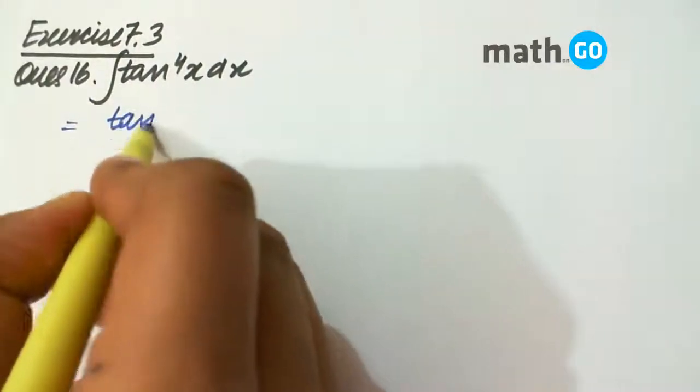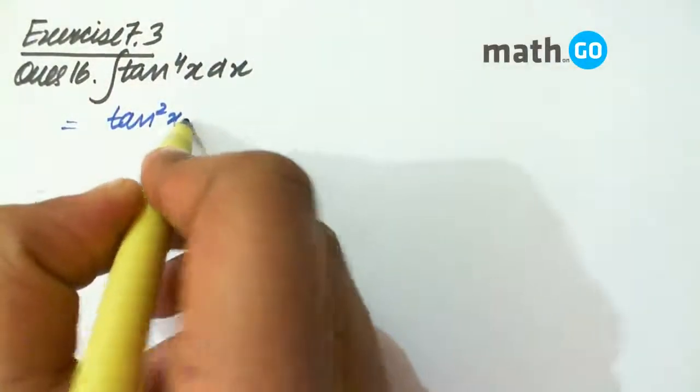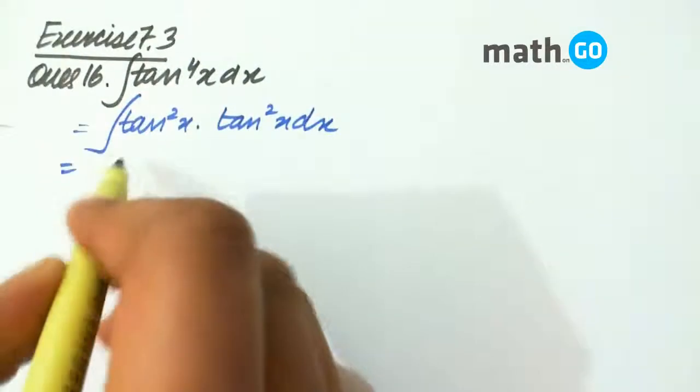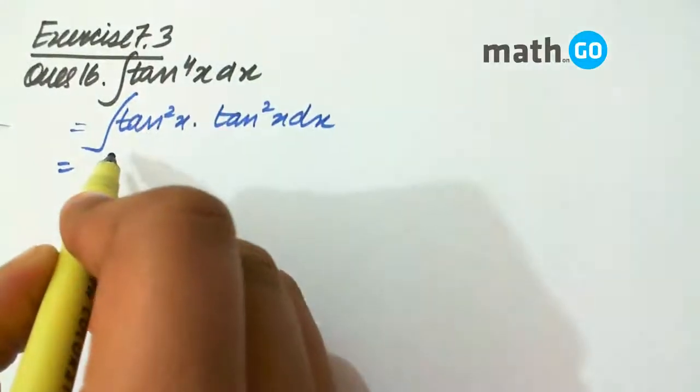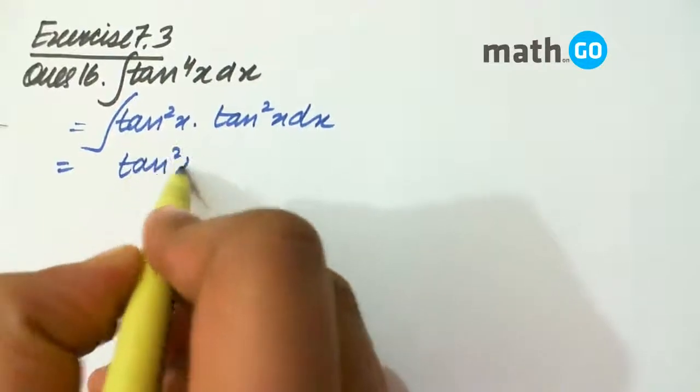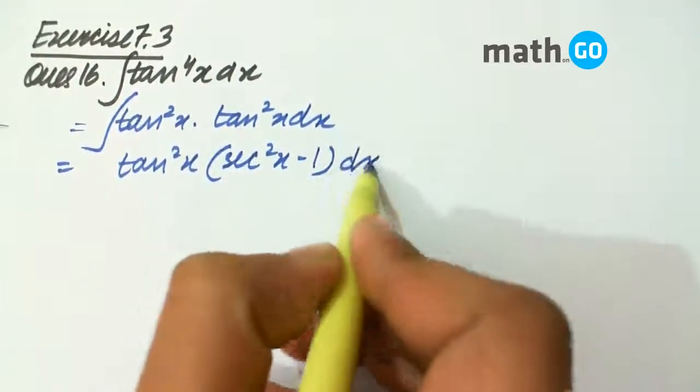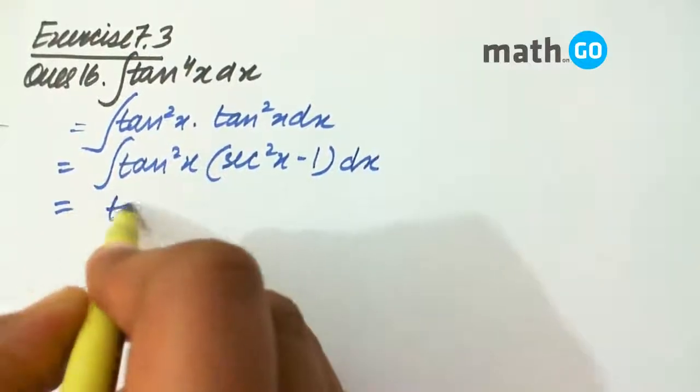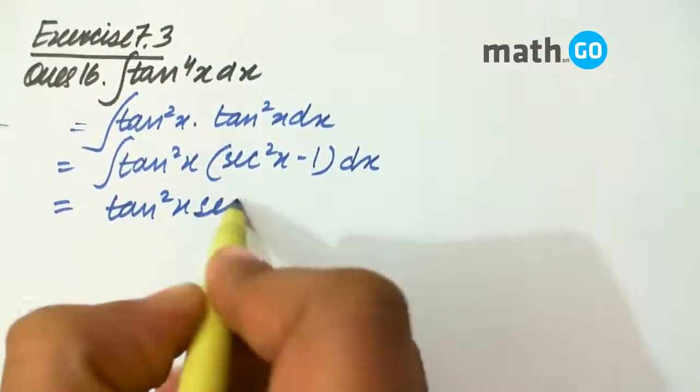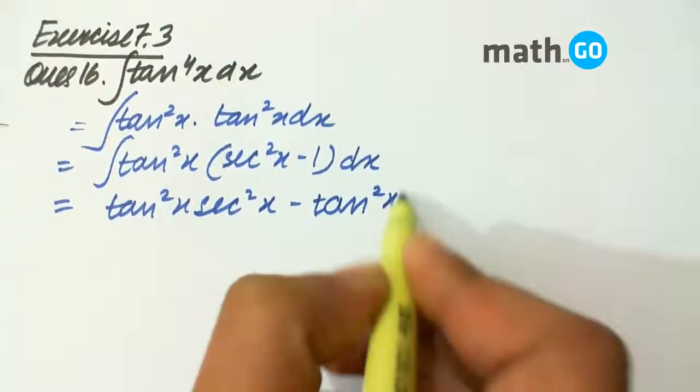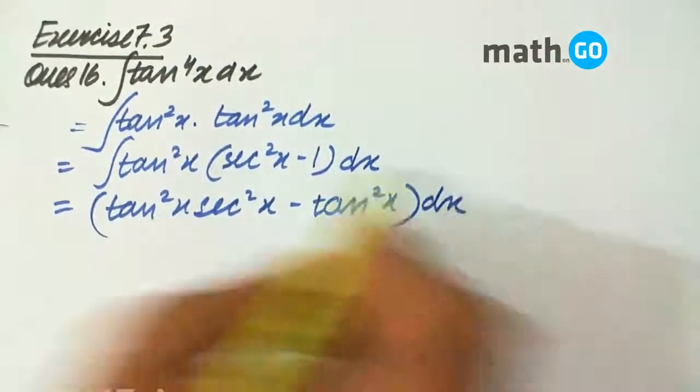We can write it as tan square x into tan square x dx. Keeping one tan square x intact, we get tan square x into sec square x minus 1 dx. The integral of tan square x into sec square x minus tan square x dx.